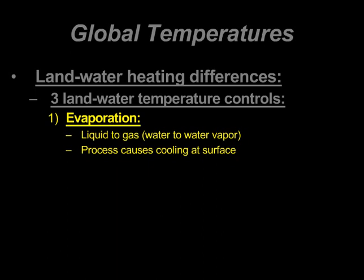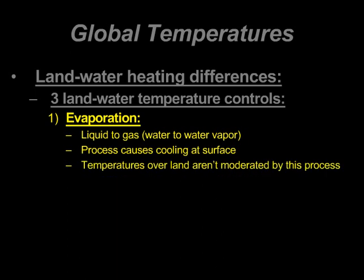One way we note evaporative cooling: if you get out of the pool on a hot summer afternoon, you get the chills and goosebumps. What's happening is that water on your skin is evaporating and cooling the surface of your skin. Evaporation is a process that land masses aren't moderated by. So in the warm summer period, large water bodies don't reach as high temperatures because evaporation helps cool the surface — and 84% of evaporation on Earth occurs in our oceans.